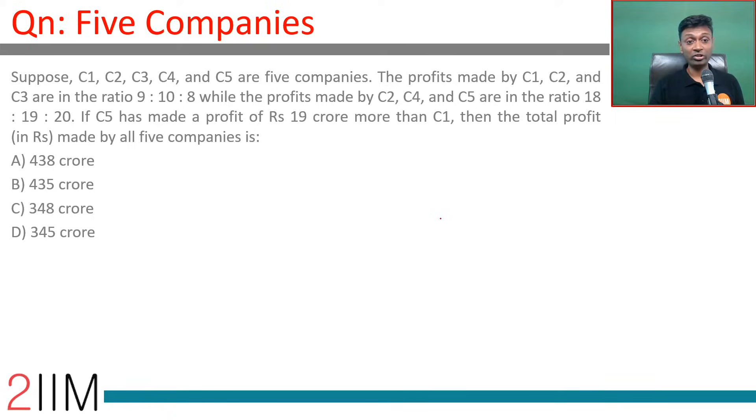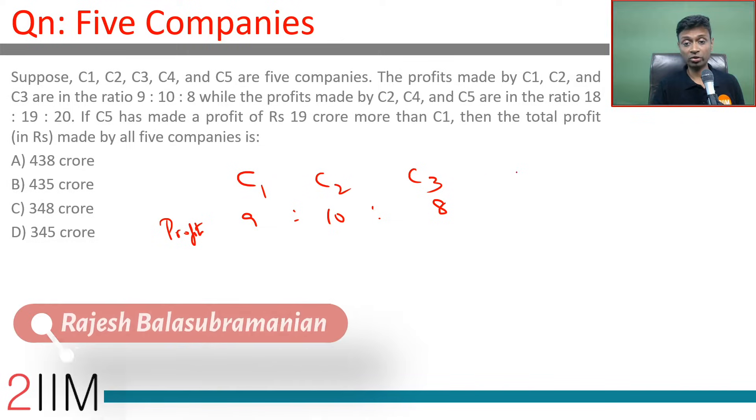Suppose C1, C2, C3, C4, and C5 are five companies. Profits made by C1, C2, and C3 are in the ratio 9:10:8. Profits made by C2, C4, and C5 are in the ratio 18:19:20.